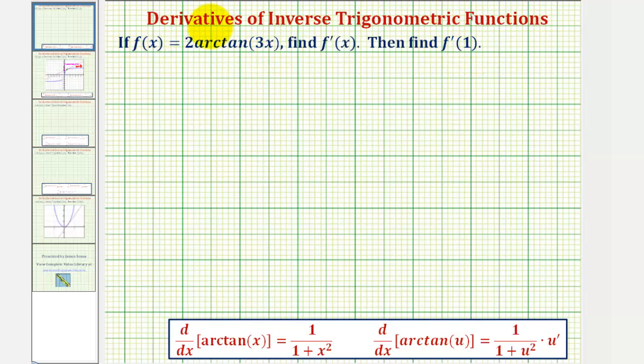Notice how our function f of x is a composite function, where the inner function would be three x, so we do have to apply the chain rule when finding our derivative.